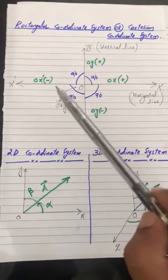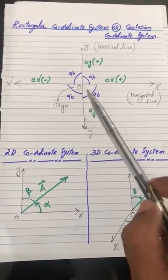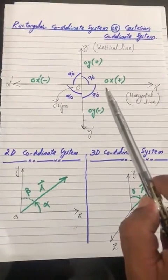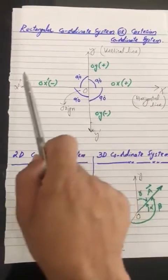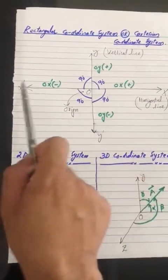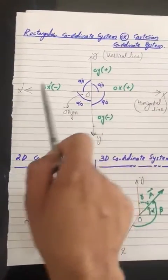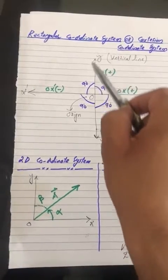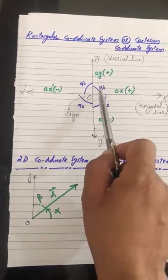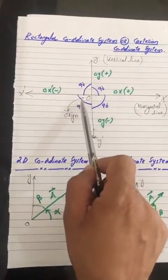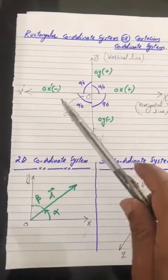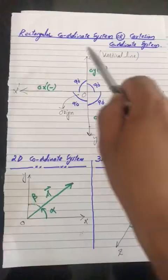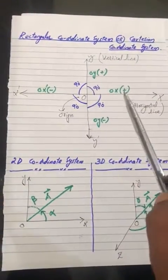Remember that rectangular coordinate system is a system which consists of two lines which are making a 90 degree angle with each other. For example, we have drawn this line and we have drawn this line — these two lines which are making a 90 degree angle with each other. So these two lines are called rectangular lines and this system is called rectangular coordinate system.